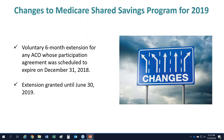Regarding other changes, for those in an MSSP model ending next month, if you want to continue through the end of June 2019 — another six months — while CMS finalizes the strategy around the new ACO risk-bearing model, you may do so without penalties. That extension is granted through 2019, giving time for CMS to finalize the new ACO risk-bearing model structure.